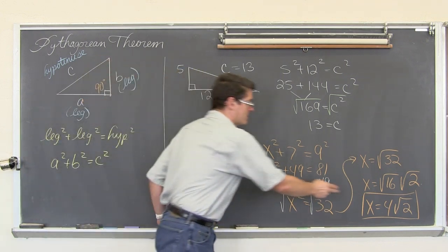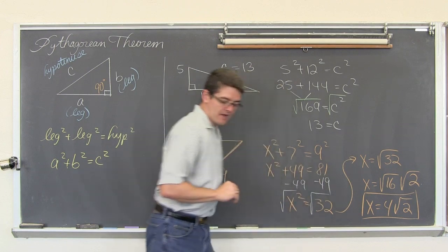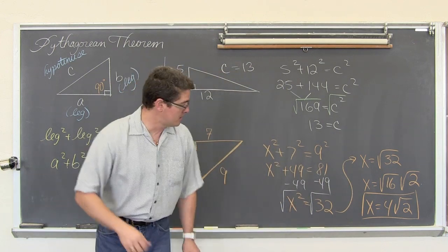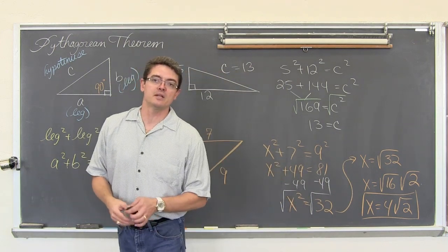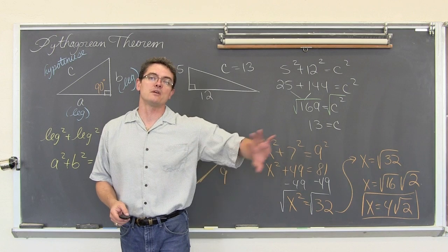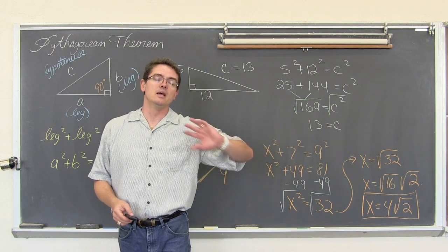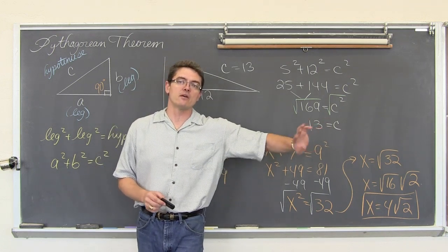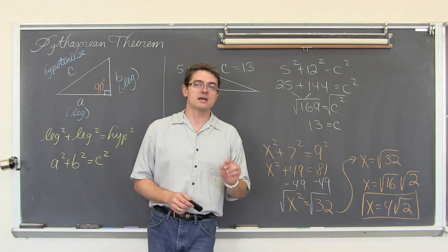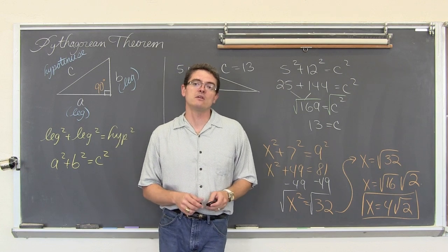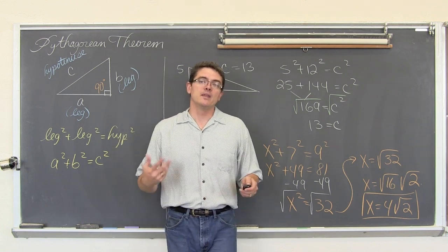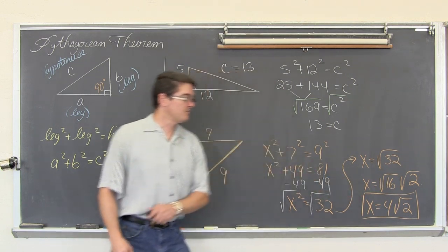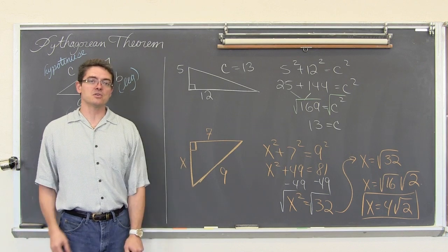That is considered an exact value answer because if you put the square root of 2 into your calculator, you get a decimal that runs off the screen — it goes on forever and ever. So that decimal is a rounded, approximate answer. This, 4 root 2, is the exact solution.